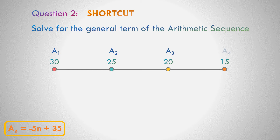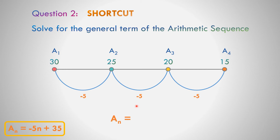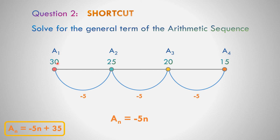Let us try the other solution to solve the general term of the arithmetic sequence for the sequence 30, 25, 20, and 15. The common difference from first up to the last term is equal to negative 5, found by subtracting the second term minus the first term: 25 minus 30, that is equal to negative 5. So a sub n is equal to negative 5n. And what is the number before 30? The number before 30 is equal to 35, because 30 plus 5 equals 35. So the general term of this arithmetic sequence is a sub n is equal to negative 5n plus 35. Any solution you may use to solve the general term of the arithmetic sequence.